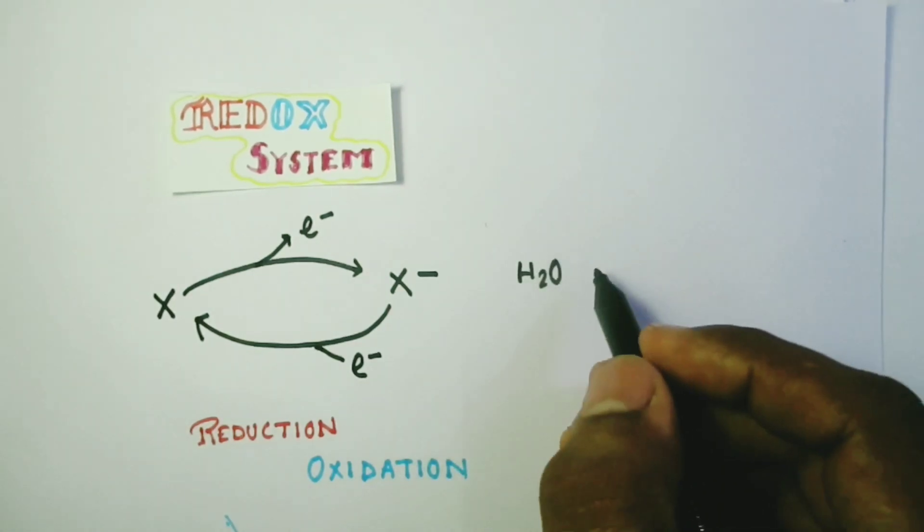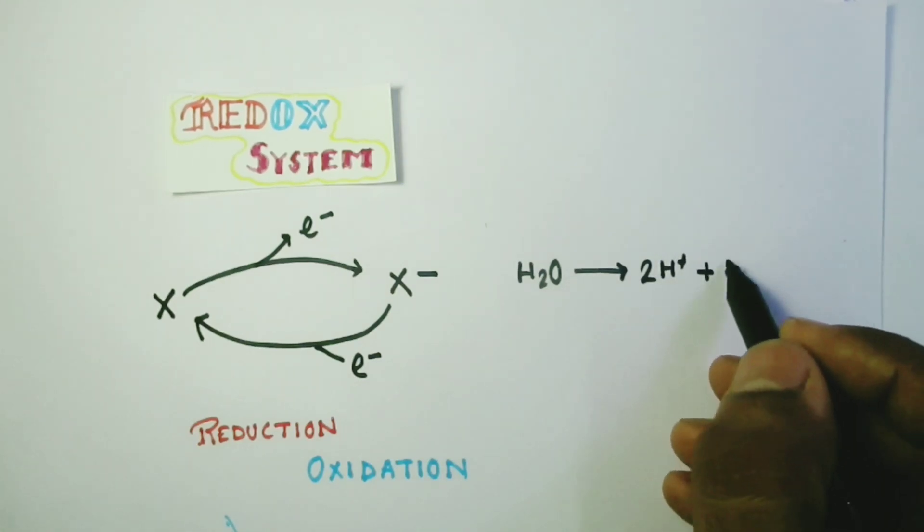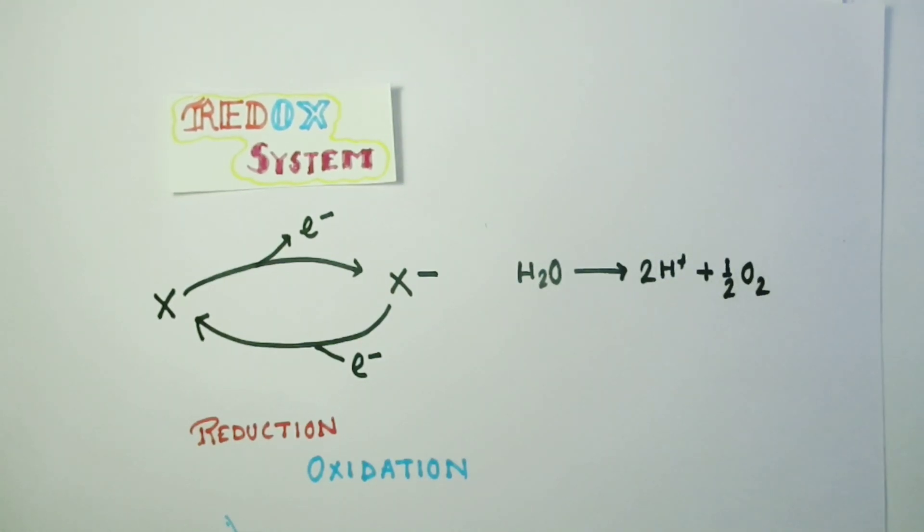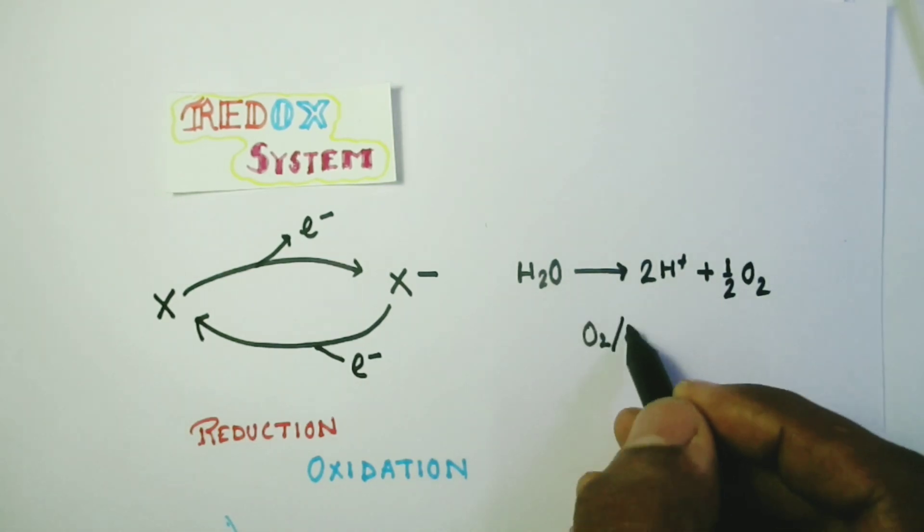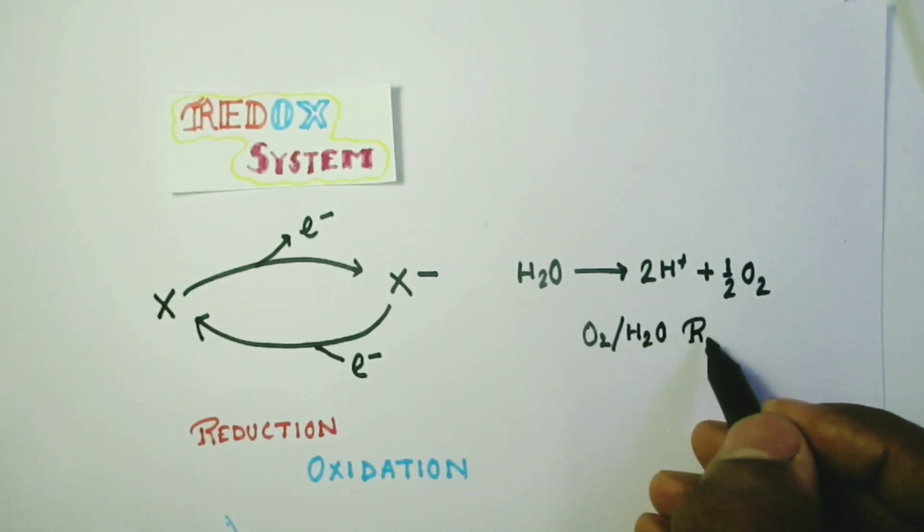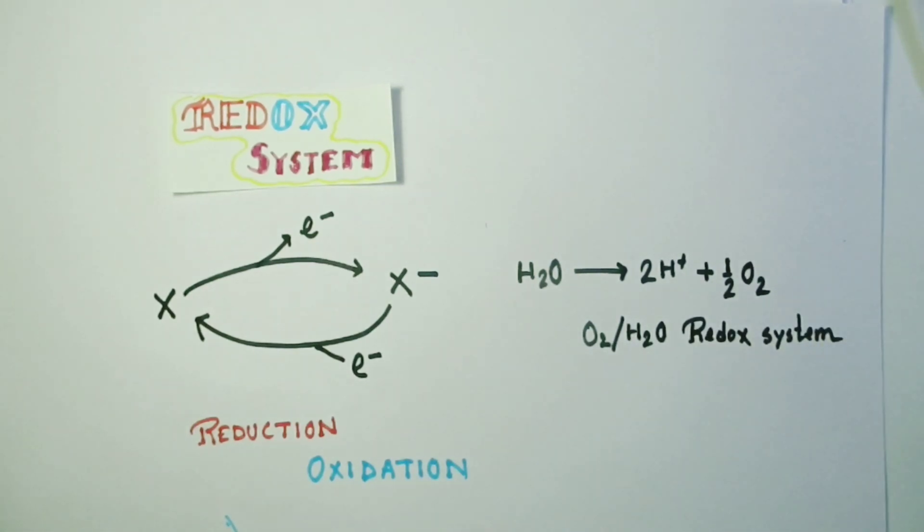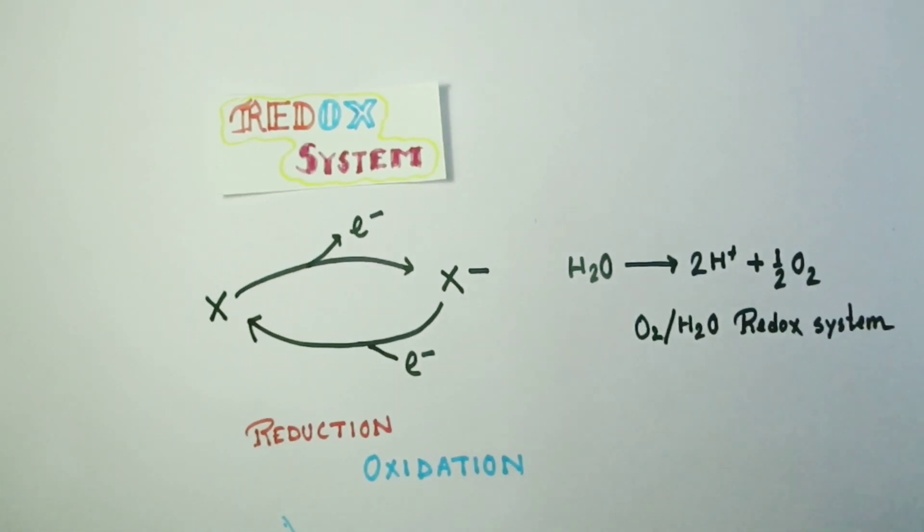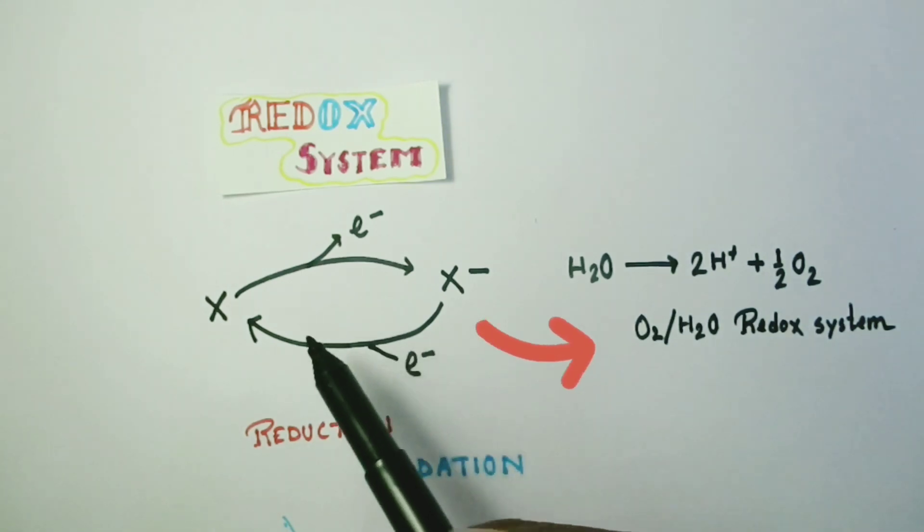In case of this reaction, H2O equals to 2H plus plus half O2 plus 2 electrons. This is a perfect example for a redox system. This redox system is called O2 H2O redox system and is in fact very important in photosynthesis.